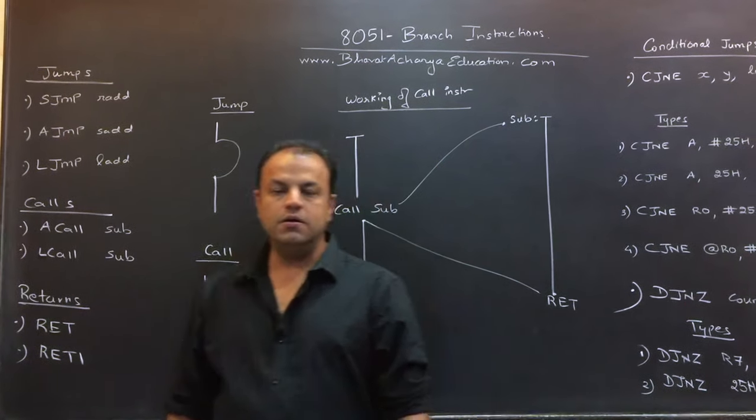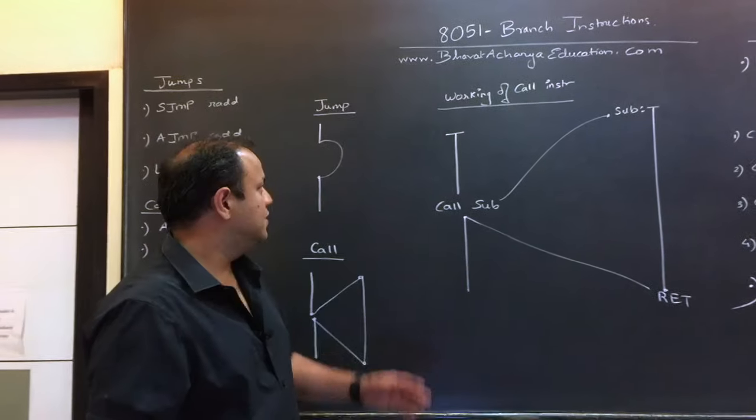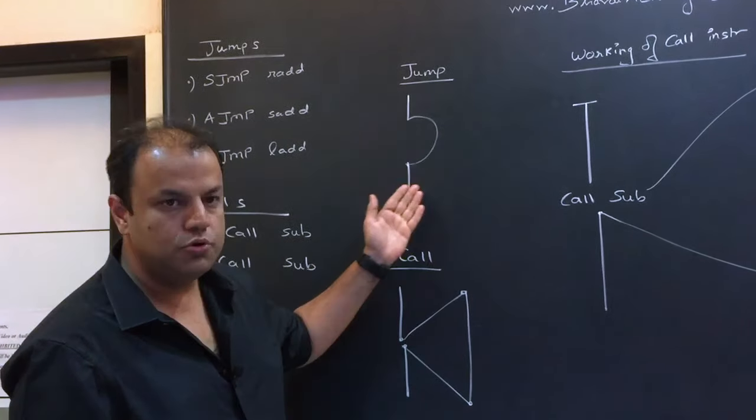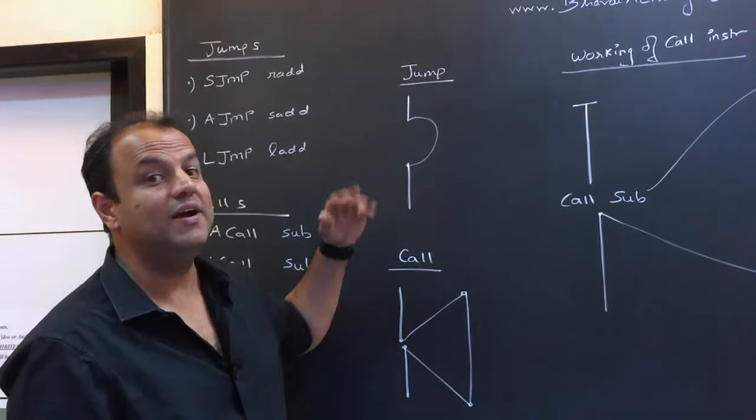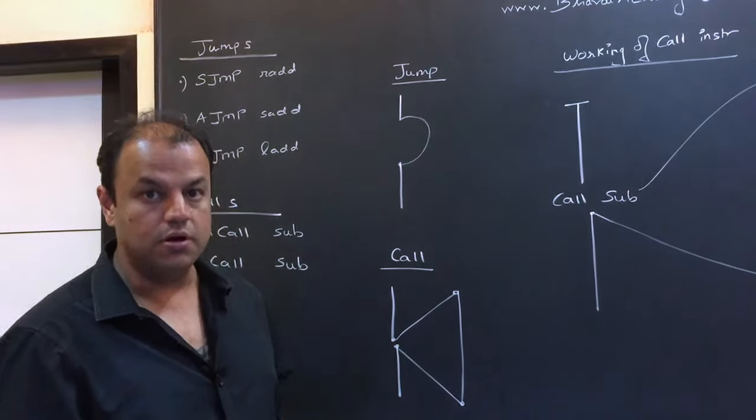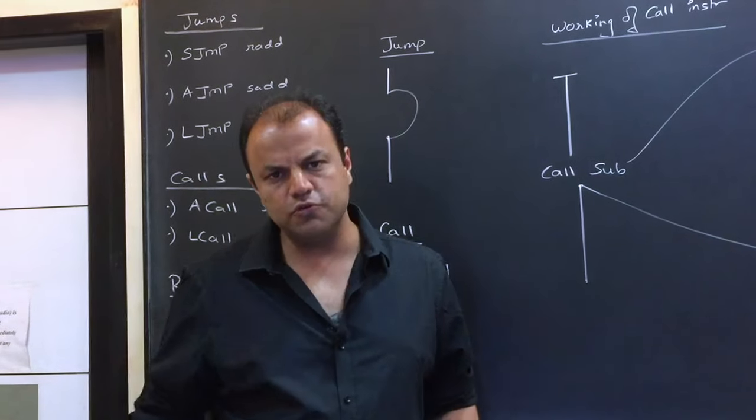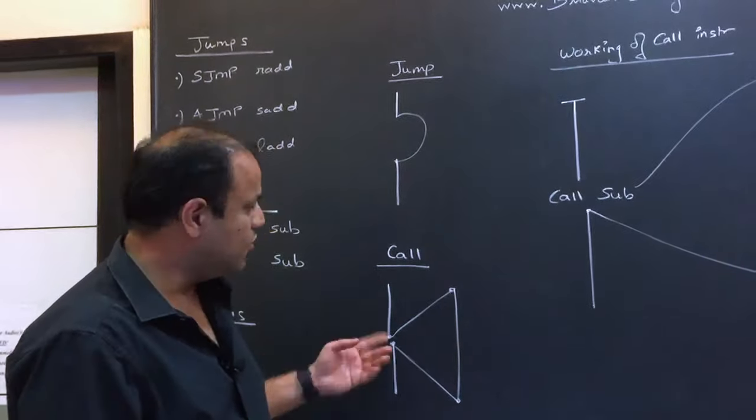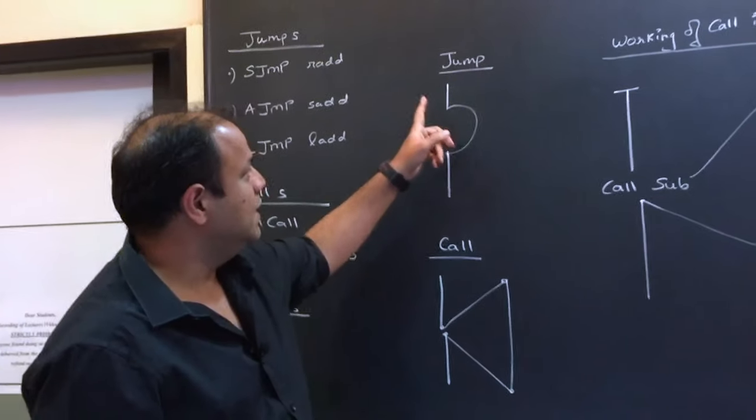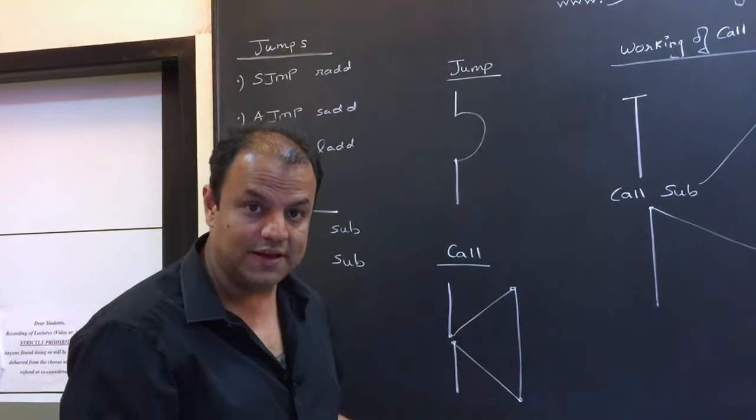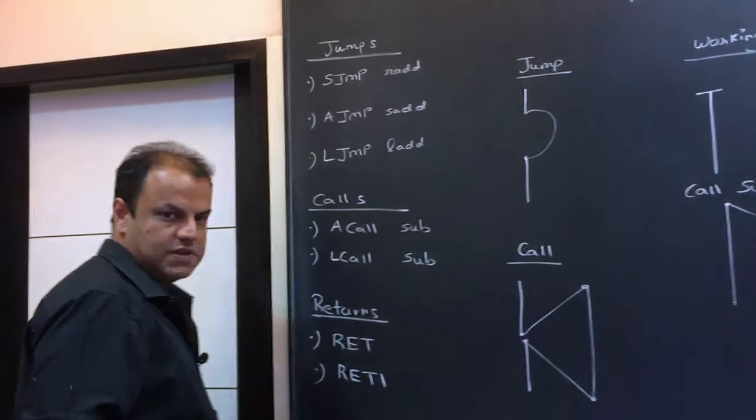Now branches are of two main types. There's something called a jump and there's something called a call. The difference between the two: in a jump you take a jump to a new location and you continue. You forget where you come from, you don't care where you come from. You just take a jump and you go ahead. Whereas when you do a call, you're calling a function. A function is also called subroutines in assembly language. So you call a subroutine, you go to the function, execute it, but you don't stay there - you come back.